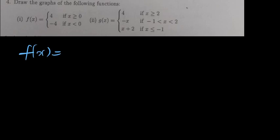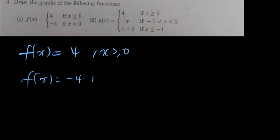One function is telling us that f(x) equals 4, and x should be greater than or equal to 0. Another one is telling us that f(x) is negative 4, and x should only be less than 0. So a piecewise function is a type of function that has got more than one function — here I've got two functions.